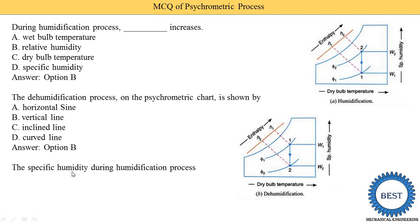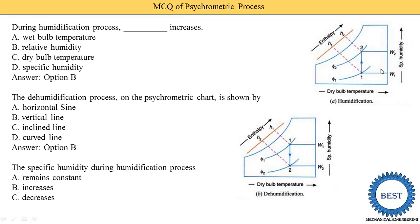The specific humidity during the humidification process: remains constant, increases, or decreases? Humidification and dehumidification processes generally occur at constant dry bulb temperature — only the specific humidity changes. If specific humidity increases, it is humidification; if it decreases, it is dehumidification. In the graph, specific humidity is increased during humidification. So option B — it increases — is the correct answer.